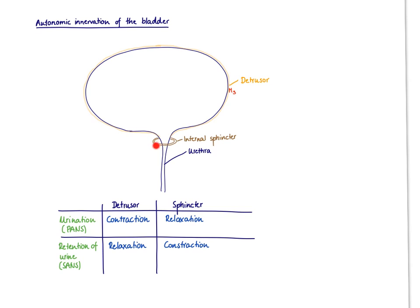Importantly, the sphincter here, the internal sphincter, needs to relax because otherwise the urine cannot come out through the urethra.